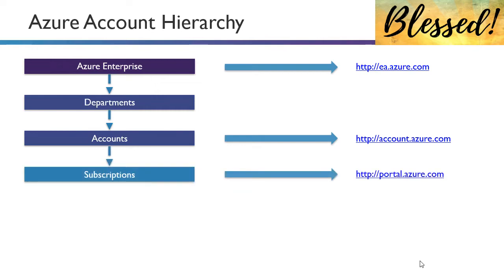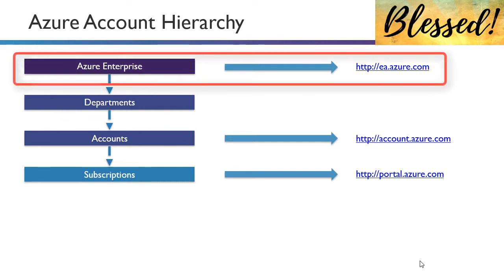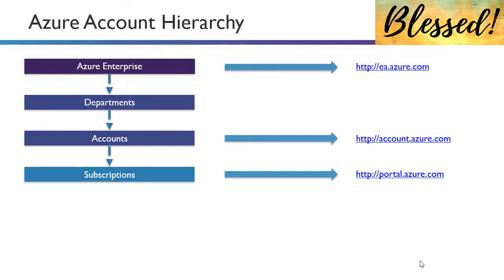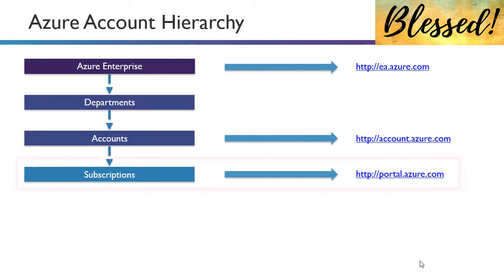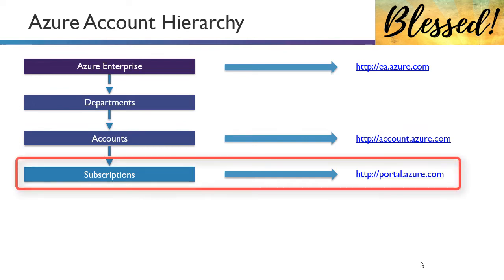Once you've created your subscription, you'll want to access the Azure portal to put resources inside it, and you do that at portal.Azure.com. To summarize: for enterprise, start at EA.Azure.com; for your Azure account, go to account.Azure.com; and for your actual subscriptions and deploying resources, go to portal.Azure.com, which you'll see throughout all the demos.